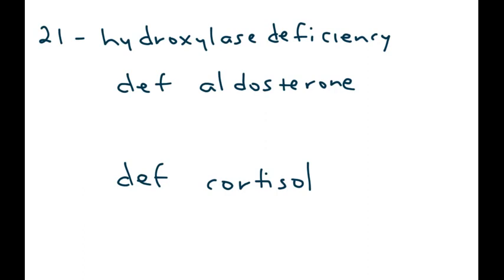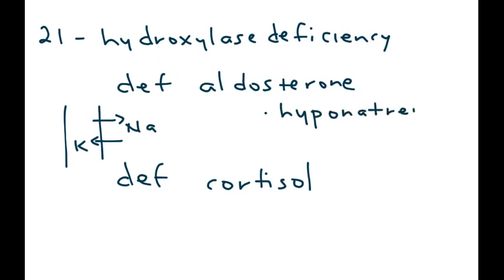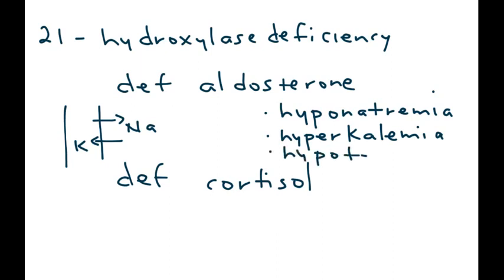With deficient aldosterone, what problems occur? Remember what aldosterone does in the nephron: it reabsorbs sodium into the bloodstream and excretes potassium into the urine. Without aldosterone, you won't reabsorb sodium, resulting in hyponatremia — low sodium in the blood. You also won't excrete potassium, resulting in hyperkalemia — high potassium in the blood. And since sodium brings back water, not reabsorbing water means blood pressure will be low — hypotension.